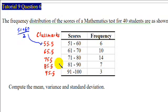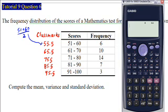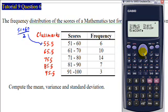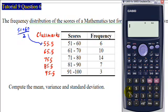Once we have finished computing the class marks, we are ready to set up the calculator for statistical calculation. To set up, press Shift then Setup. Go down and look for Statistics — press 3 for statistics. Then we turn on the frequency distribution table by pressing 1.